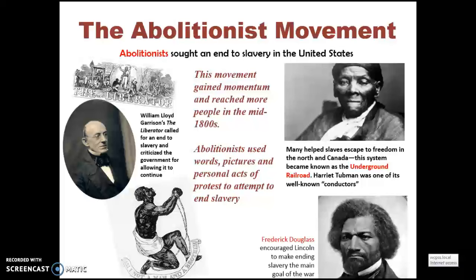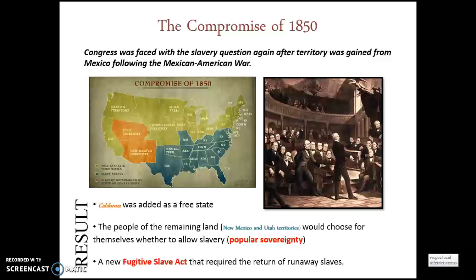The Compromise of 1850 arose when Congress faced the slavery question again after territory was gained from Mexico following the Mexican-American War. California was added as a free state. The people of the remaining land in the New Mexico and Utah territories would choose for themselves whether to allow slavery — this is called popular sovereignty, where you leave it up to the people to decide. They also passed a new Fugitive Slave Act that required the return of runaway slaves, because southerners wanted guarantees they could recover slaves escaping through the Underground Railroad.